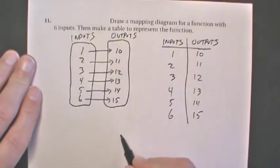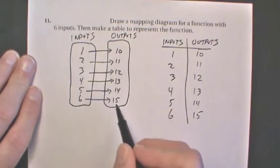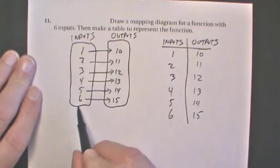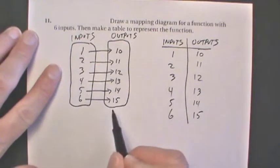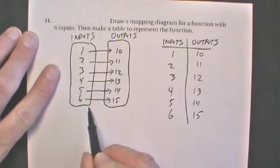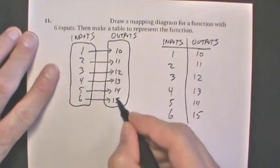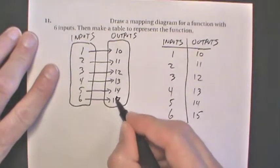Now, one thing we can notice here is that to be a function, all the inputs have to be unique, but the outputs do not need to be unique. So this six here could actually be paired with 14.